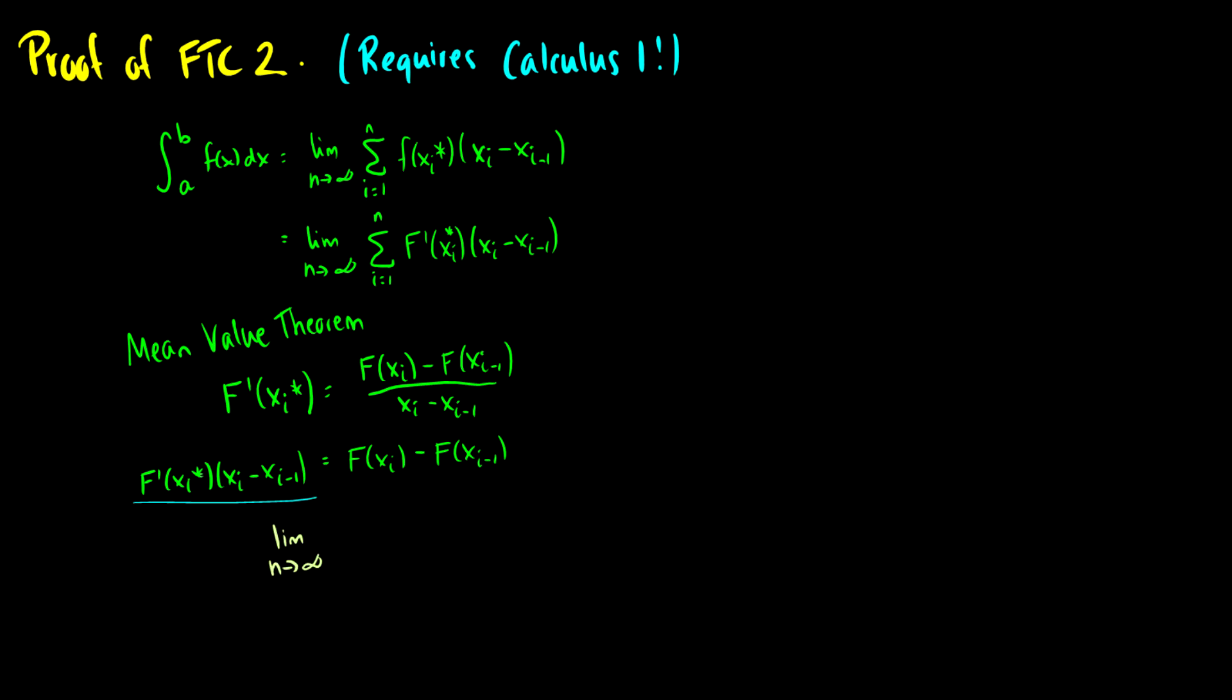So when we do this on the right side, we get the limit as n goes to infinity of the sum of i equals 1 to n of f of x_i minus f of x_i minus 1. So I'm going to put some brackets around here.